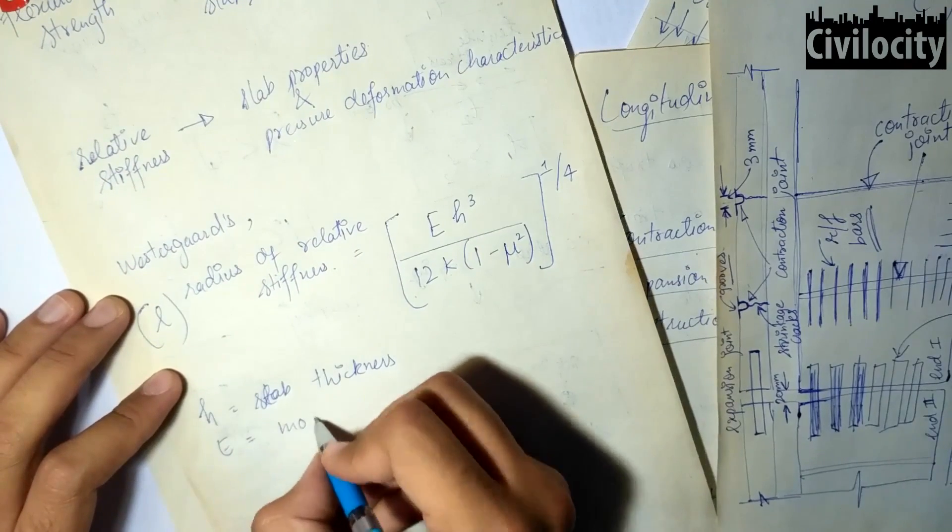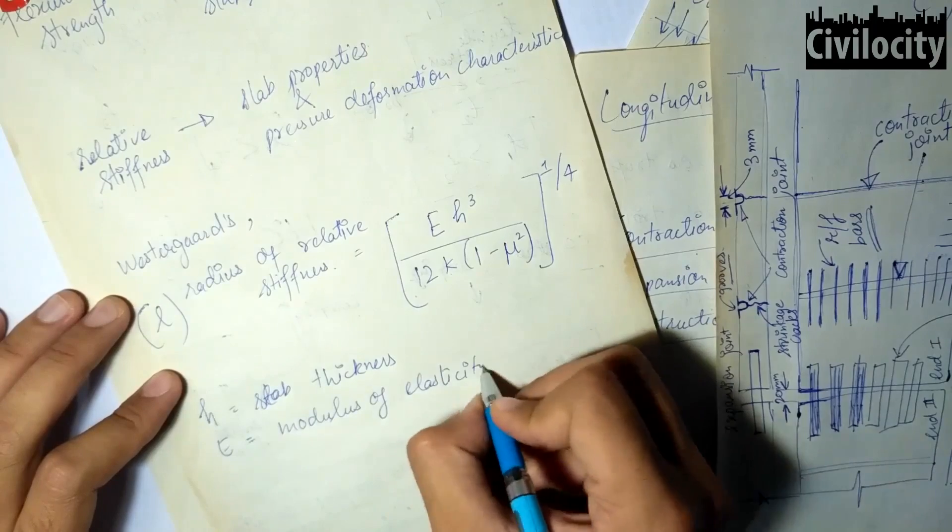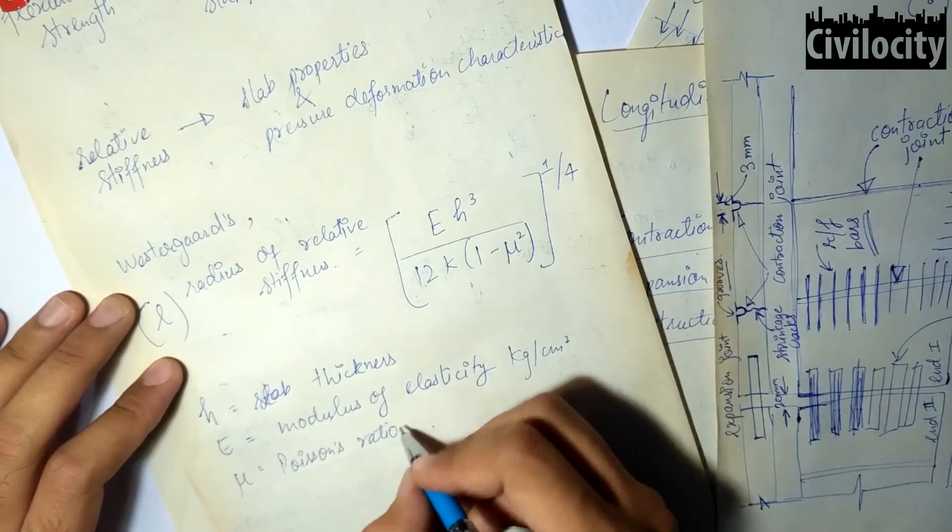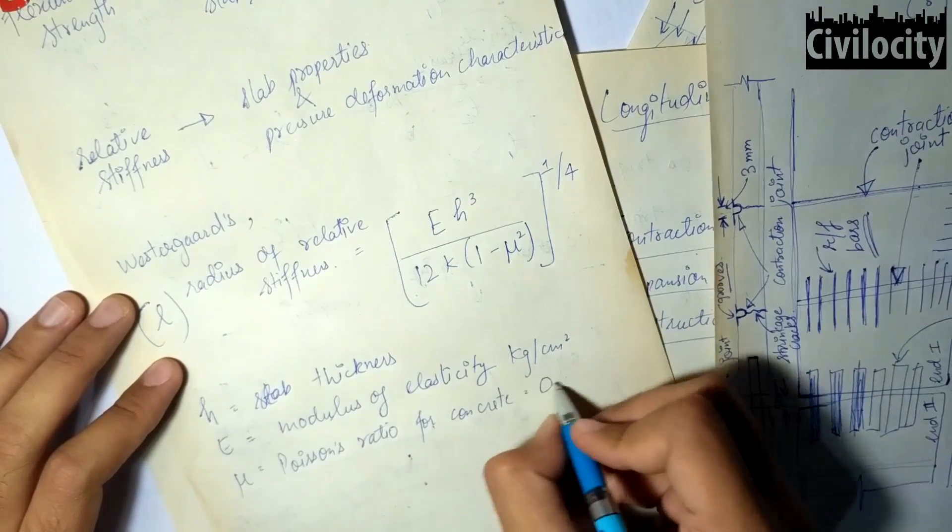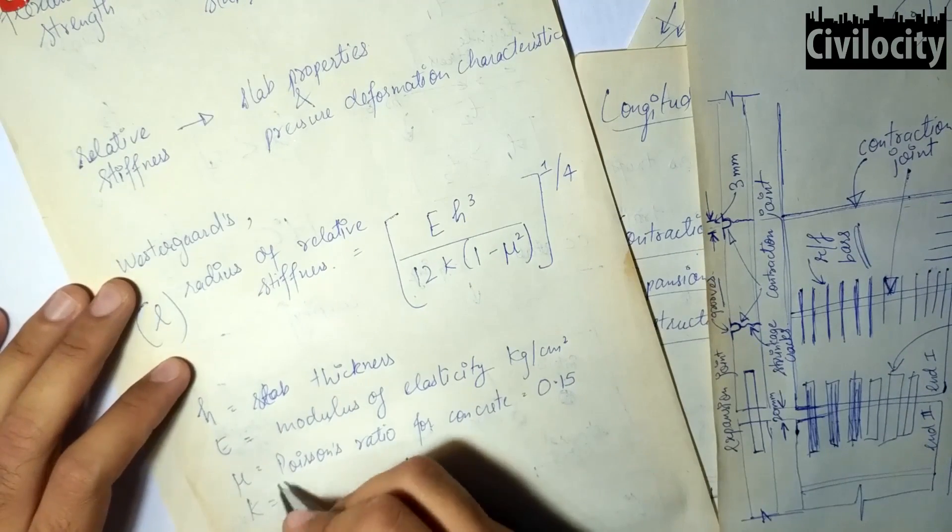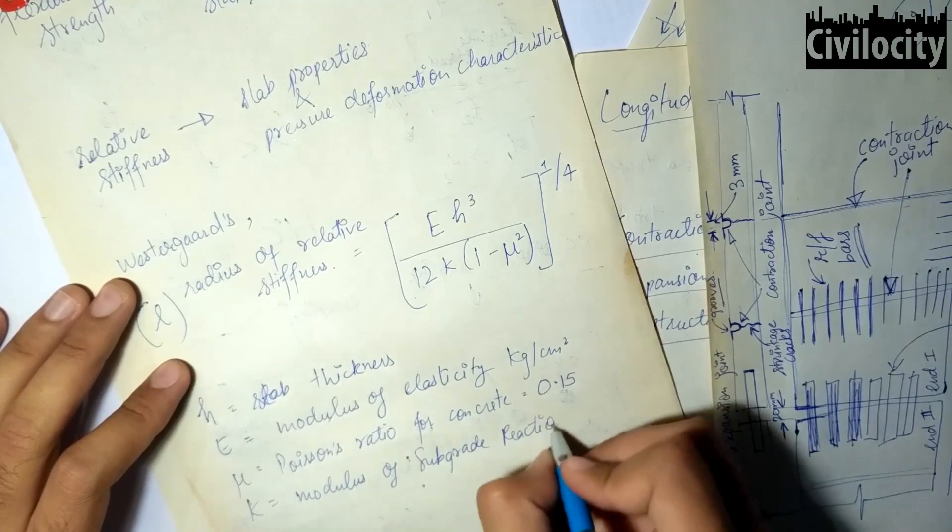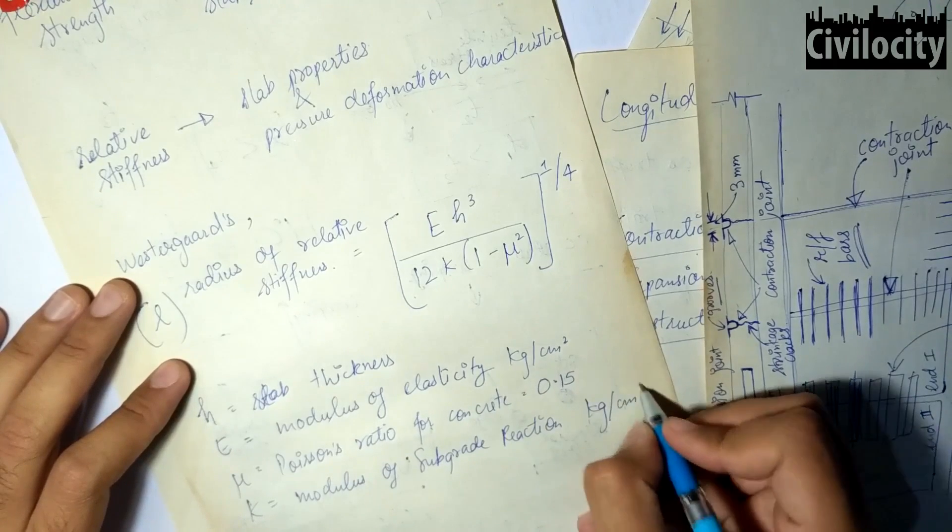Where L is the radius of the relative stiffness, H is the slab thickness, E is the modulus of elasticity of cement concrete in kilogram per centimeter square, nu is the Poisson's ratio for concrete which is 0.15, and K is the modulus of subgrade reaction in kilogram per centimeter cube.